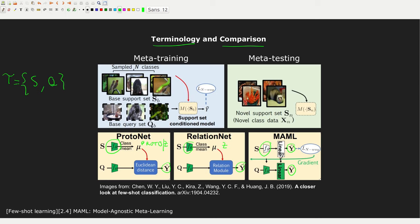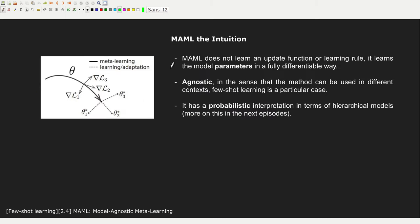The two networks have a different color because they represent two slightly different configurations. Some interesting properties of MAML: we are not learning an update function or learning rules like other methods, but we are directly learning the model parameters in a fully differentiable approach. The method is model agnostic, meaning it can be used in a variety of contexts — few-shot classification is just one particular case. MAML also has a probabilistic interpretation in terms of Bayesian hierarchical models.